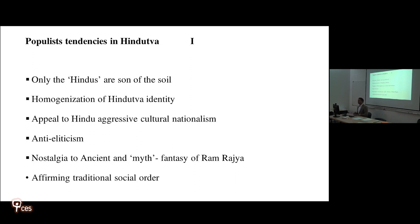Hindutva populism believes in the homogenization of Hindu identity — meaning those living in India, including Muslims and Christians, are called Hindu and cannot have a distinct identity. Everyone living in India is Hindu, and no other identity exists. Other smaller identities such as Dalits, Jains, Sikhs, and Buddhists are all subsumed under the category of Hindutva.